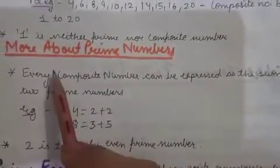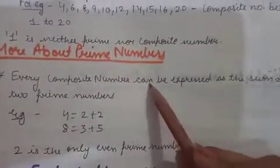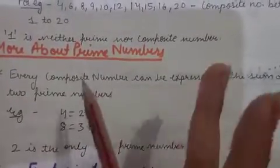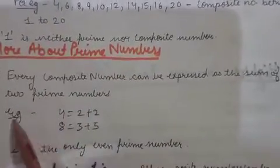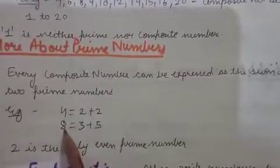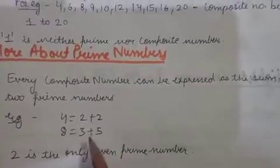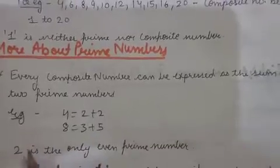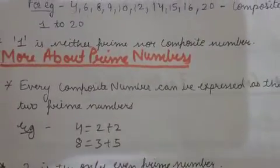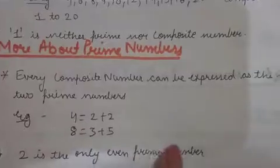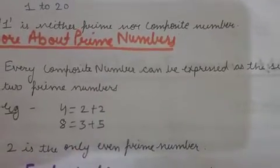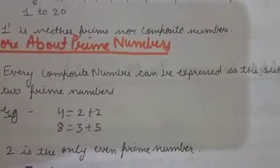Now let's talk more about prime numbers. Every composite number can be written as the sum of two prime numbers. For example, 4 can be written as 2 plus 2, and both are prime. Similarly, 8 can be written as 3 plus 5. Another condition is that 2 is the only even prime number. This will become clear when we find prime numbers from 1 to 100.